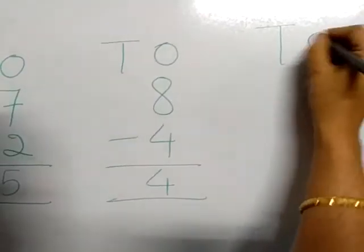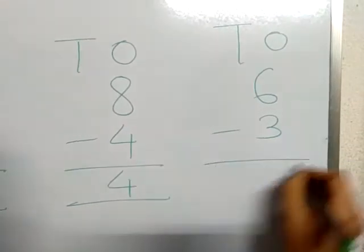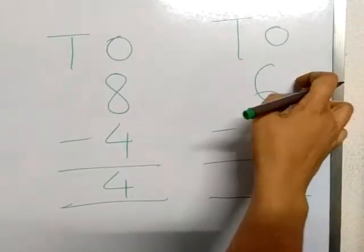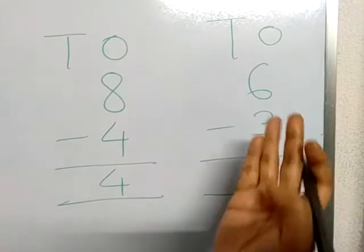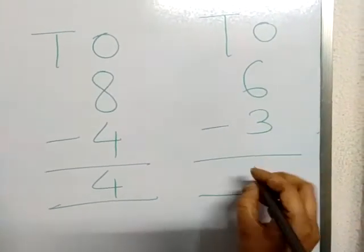Now, next is 6 minus 3. 6 is the big number, 3 is the small number. Start at 3, 4, 5, 6. Count 1, 2, 3. Now, next is horizontal.